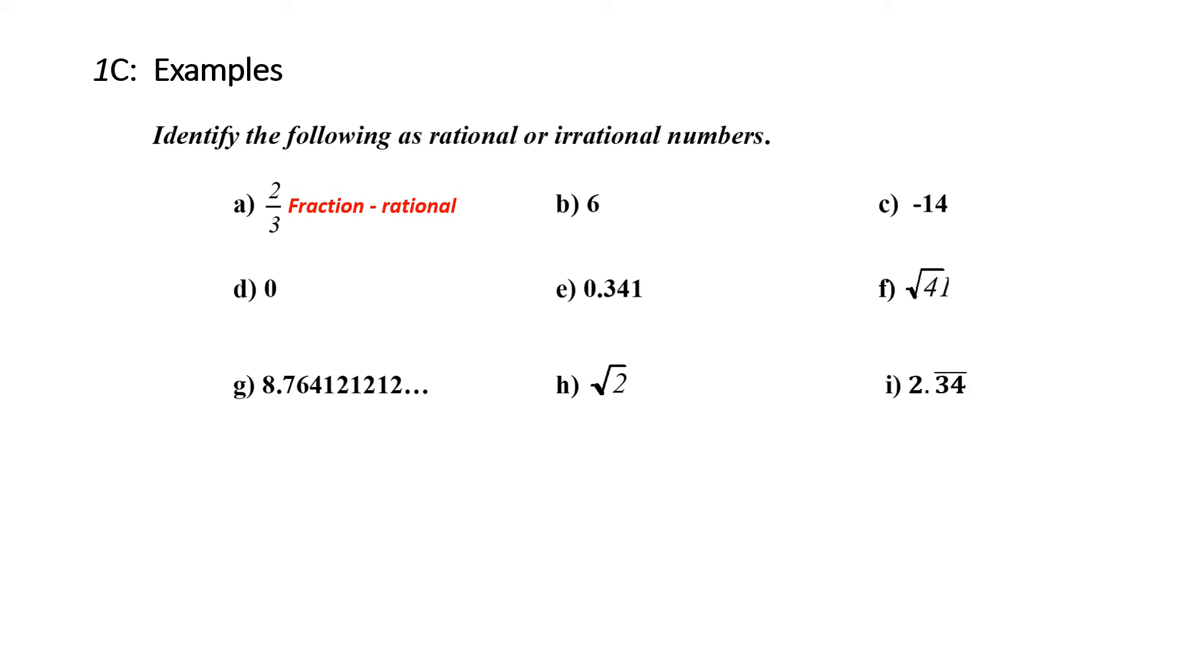How about 6? Well, I can write that as 6 over 1, which makes it rational. Negative 14? Well, it's an integer and we know that all integers are inside the rational number circle. Therefore it's got to be rational. 0. 0 is a whole number. All whole numbers are rational numbers. Therefore it's rational.